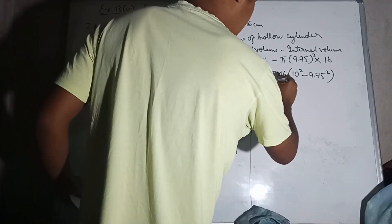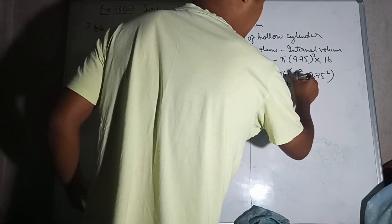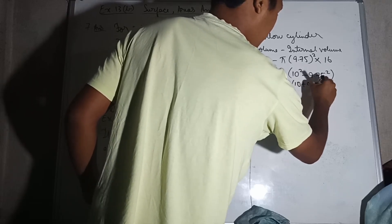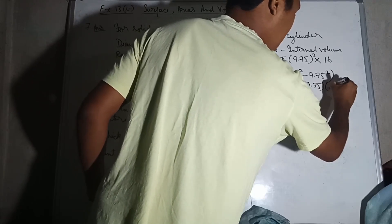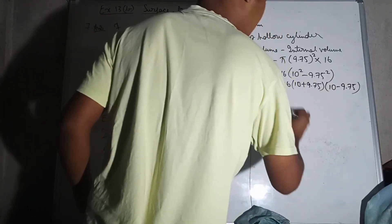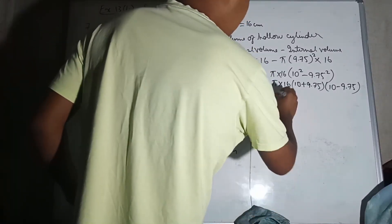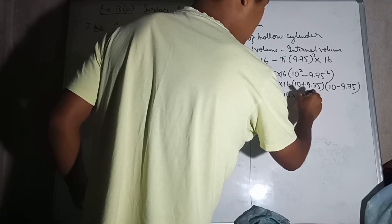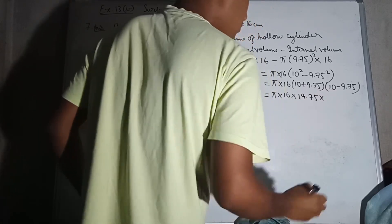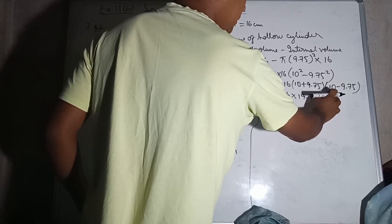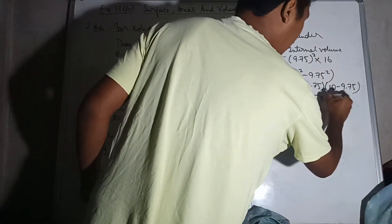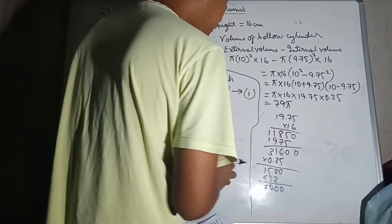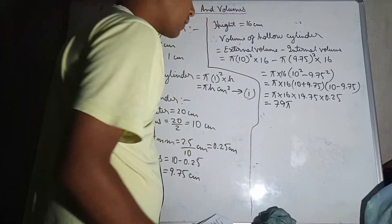Applying the identity a² minus b² equals (a+b)(a-b): we get π into 16 into (10 + 9.75) into (10 minus 9.75), which equals π into 16 into 19.75 into 0.25.